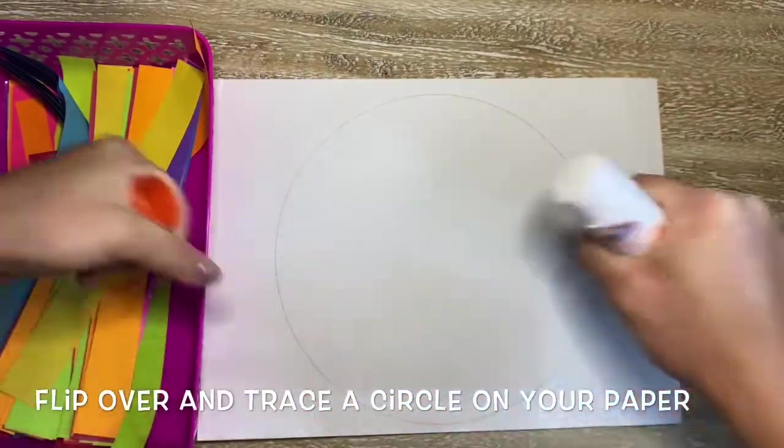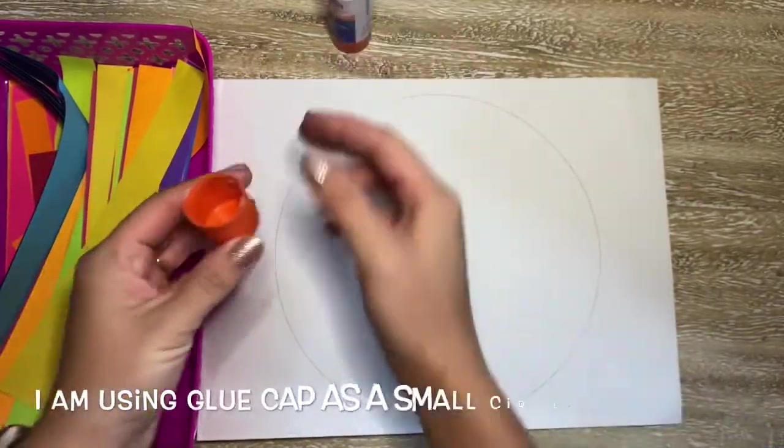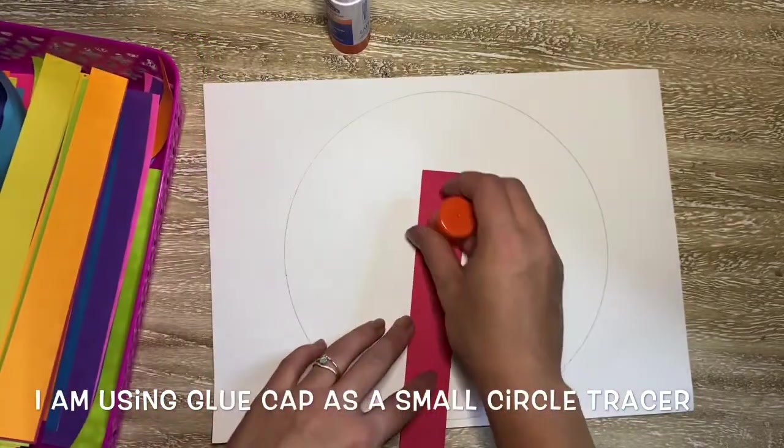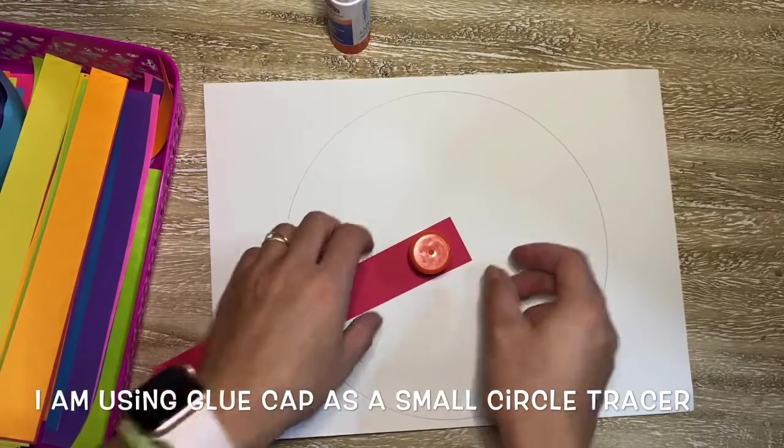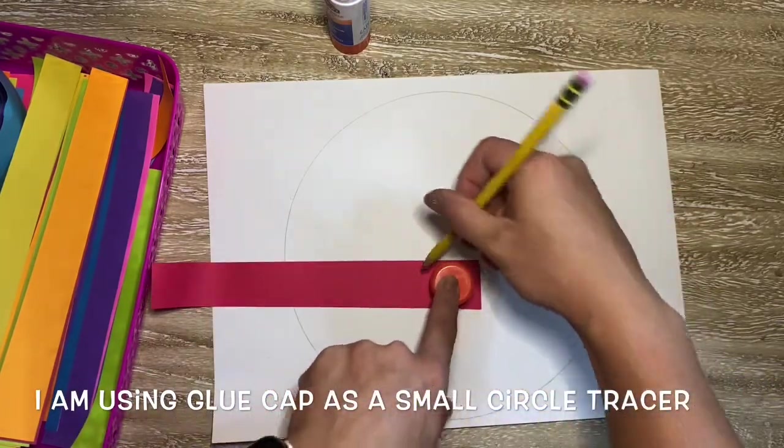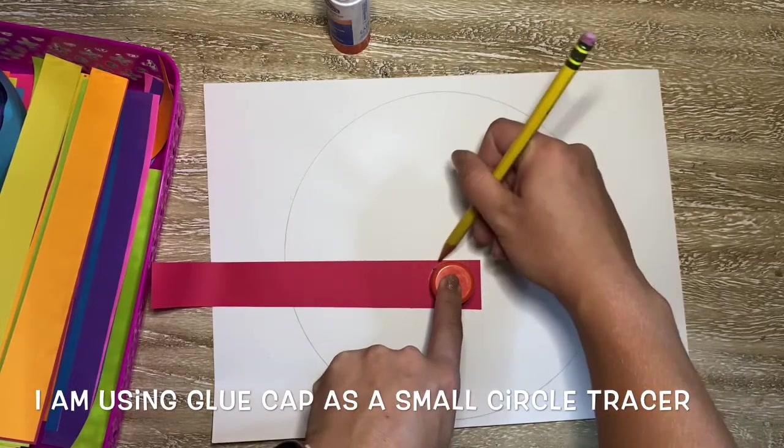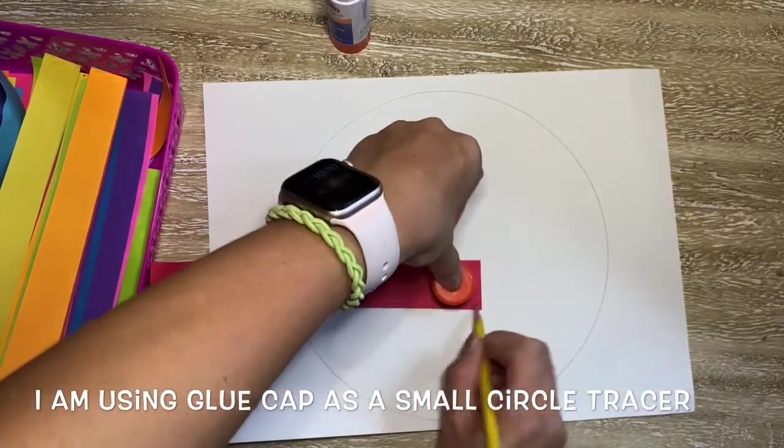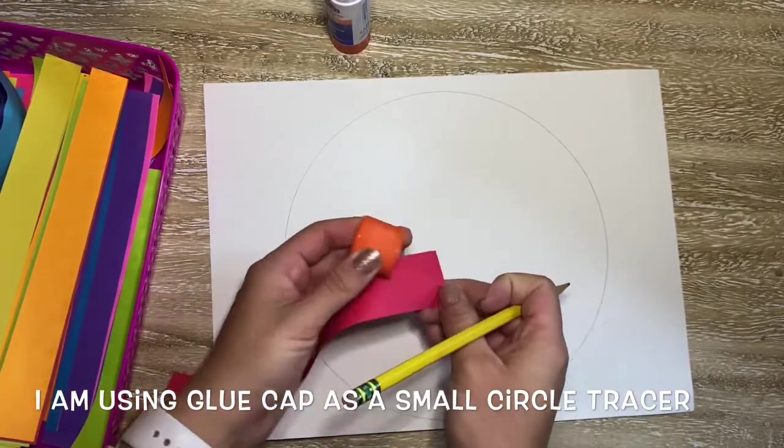Now I'm going to get my glue stick, using those art muscles to pull that lid off, and now I'm actually going to use this lid as another circle tracer. This circle is going to be a much smaller circle to put in the center just like Alma Thomas started a lot of her paintings. So notice I'm doing the same technique but this time I only have to hold it down with one finger as I trace around it with my other.